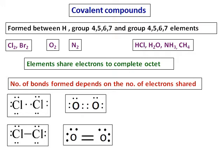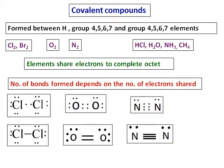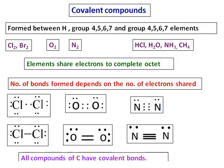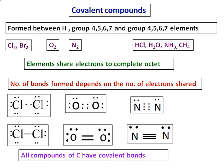In the case of nitrogen, which has five outer electrons, it needs three more to complete the octet. Therefore, each nitrogen shares three electrons, giving three pairs of electrons between the two nitrogen atoms, and a triple bond is formed. Each bond represents two electrons. All compounds of carbon form covalent bonds, and carbon compounds have a special chemistry called organic chemistry.